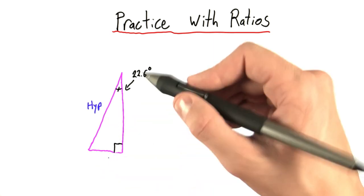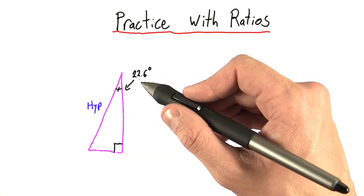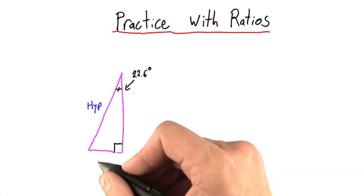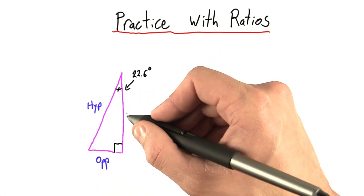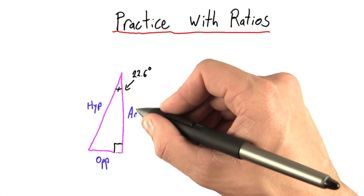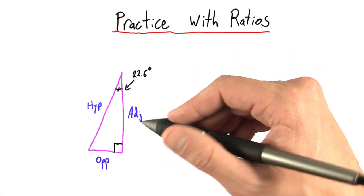This side here at the bottom is opposite the angle we're referring to. So let's call that the opposite side. This side, being next to the angle, is adjacent. I'm going to label that ADJ. Adjacent just means next to.